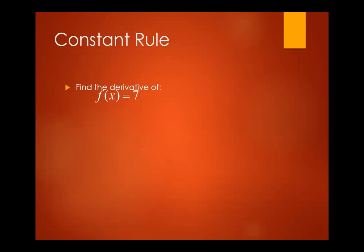Example: Find the derivative. F of X equals 7 — the derivative of a constant is 0. Another example: Y equals negative 3. The derivative of Y with respect to X is 0, or Y prime equals 0.